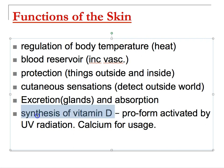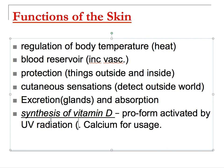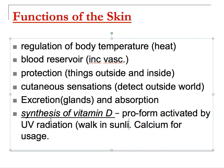An incredibly important function that doesn't get much attention until Chapter 18 is the synthesis of vitamin D. The pro-form of vitamin D is activated by UV radiation — this is why you go out for a walk in the sunlight. The active form is called calcitriol, which increases calcium availability by reducing calcium loss in urine and increasing calcium absorption from the digestive tract. Calcium is essential to the functioning of our body.